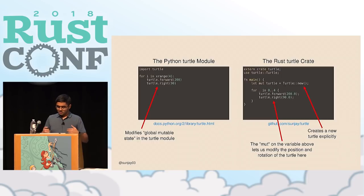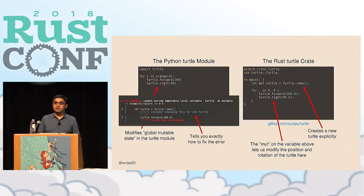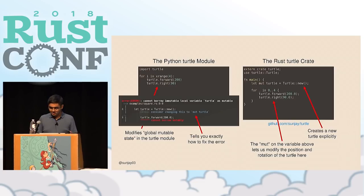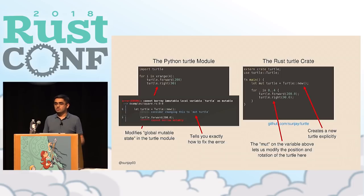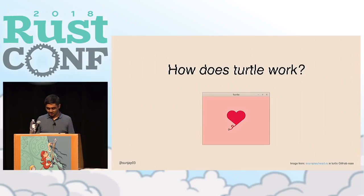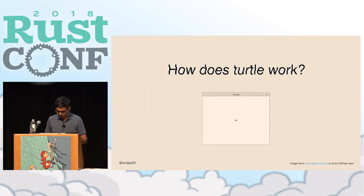Rust won't even let you use the `forward` and `right` methods if you don't declare your variable with `mut`, because both methods modify the turtle itself. This is a tiny bit more friction than the Python implementation, but I think it's worthwhile because it teaches good habits. And the wonderful thing about Rust is that even if you forget the `mut` keyword, there's a really nice error message that tells you exactly how to fix the problem. That means even if you're new and not used to things, it's very hard to get stuck if you just read the error message.